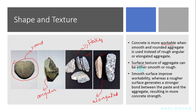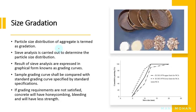Not more than 10 to 15% of flaky and elongated aggregates should be used in concrete. The surface texture of aggregate can be either smooth or rough. A smooth surface can improve workability, yet a rougher surface generates a stronger bond between the paste and the aggregate, thereby creating higher strength in the resulting concrete.